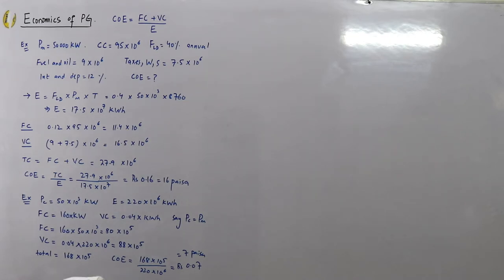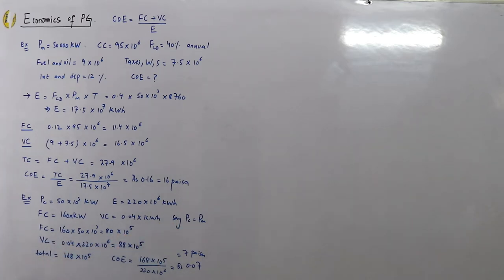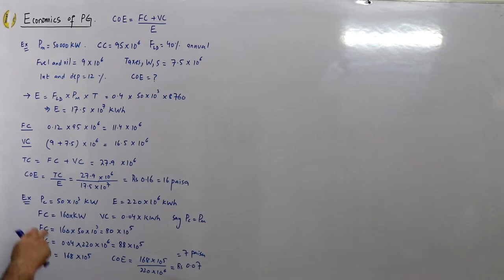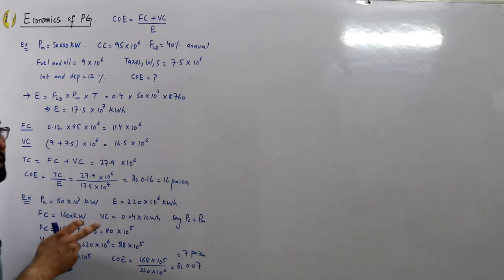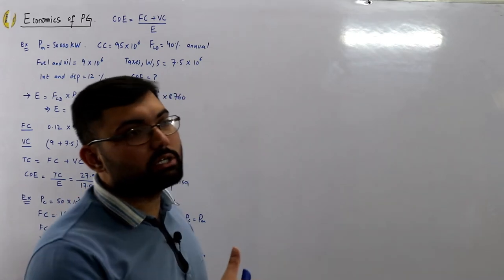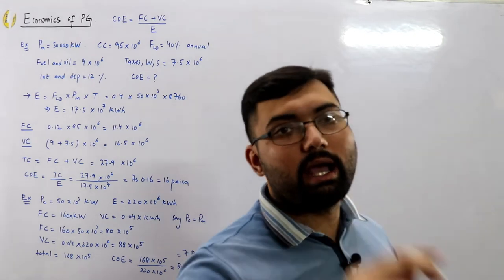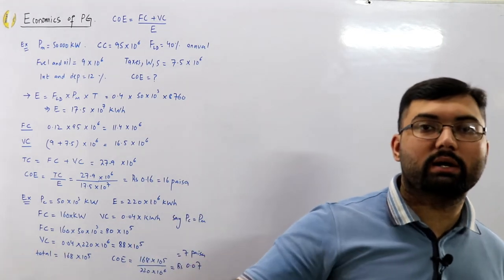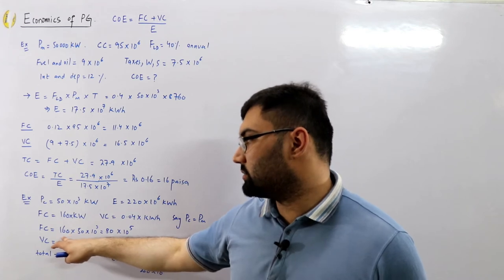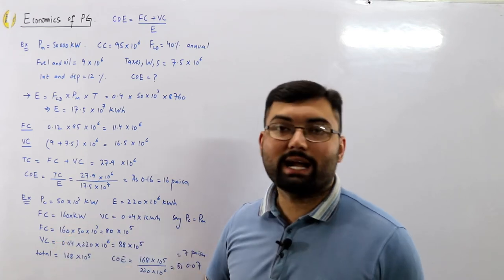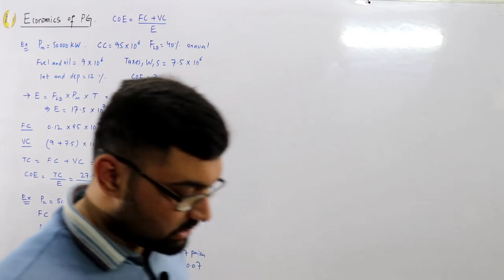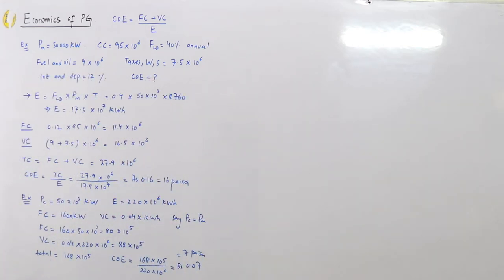Note: here I took installed capacity equal to maximum demand. If you want to include a reserve capacity as well, you must explicitly state that — for example, maximum demand is 40 megawatts and reserve capacity is 10 megawatts — then multiply 160 by 40 for the fixed cost calculation.